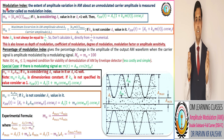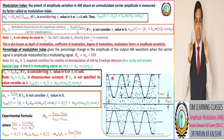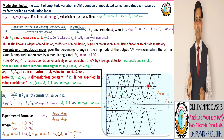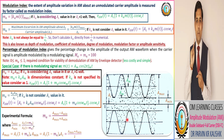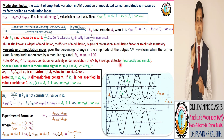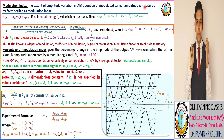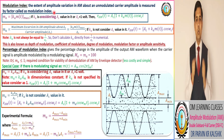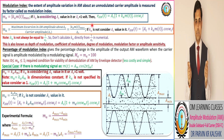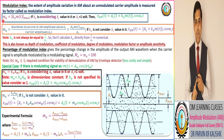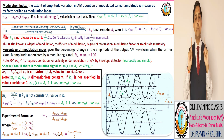The modulation index measures the extent of amplitude variation in an AM modulated signal about an unmodulated carrier wave. It is known as the modulation index, and it is represented with two representations.